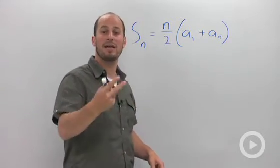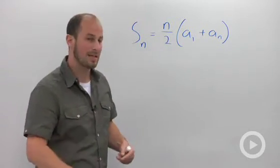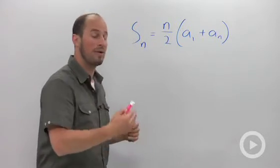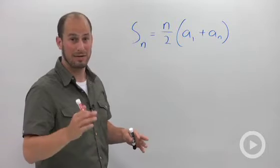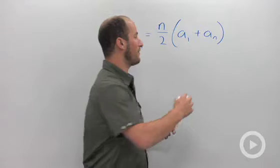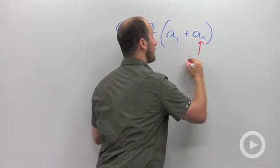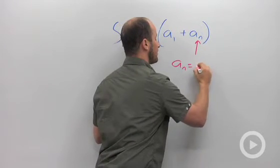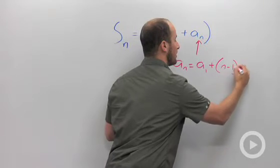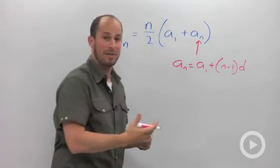There is actually another way to write this as well. And you can either remember it, which I tend not to, I have a really bad memory, or you can derive it, which is the way that I do it. So a sub n is the nth term. We have an equation for that though. We have the general term, which is a sub n is equal to a sub 1 plus n minus 1 times d.